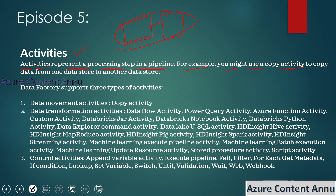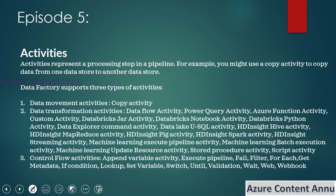For example, you might use a copy activity to copy data from one data store to another. ADF has multiple activities you can use as per your requirement. Data Factory supports three types of activities: data movement activities, data transformation activities, and control flow activities.